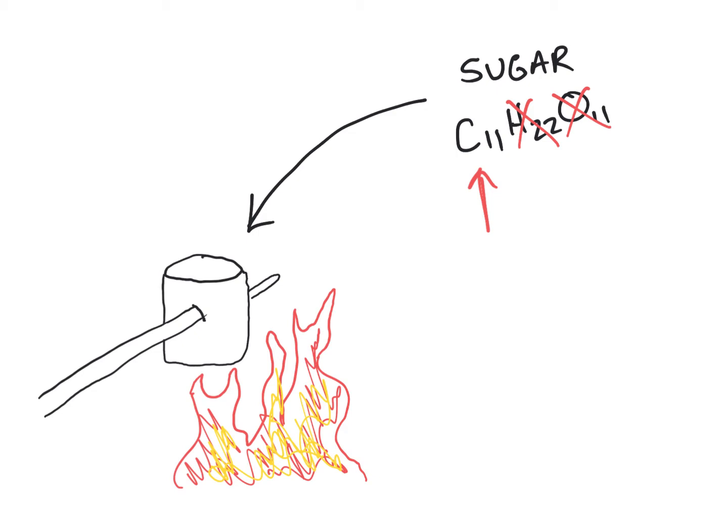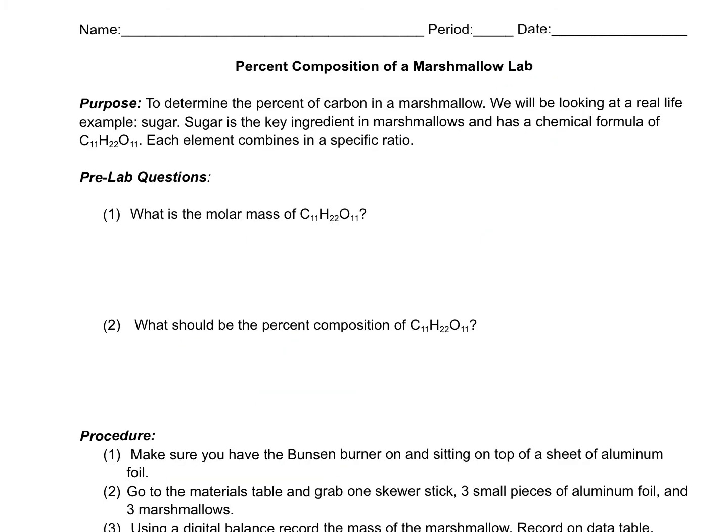This is always a fun lab to do in class because we get to eat some marshmallows after we're done. But you all will be looking at your lab report and filling it out along with this video. So you have your lab report open, and I'm going to help you along with some of this. We're going to look at the pre-lab questions together. The first thing that we need to do is find the molar mass of this sugar. Well, we calculated this a couple weeks ago, well, months ago.